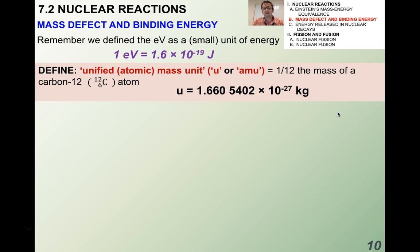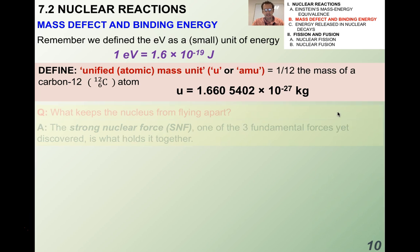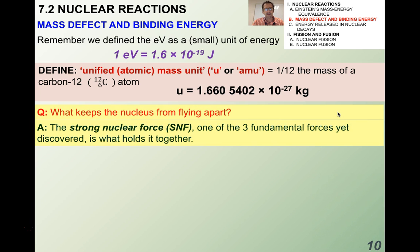An AMU, as you may know from chemistry, is defined as one twelfth the mass of a carbon-12 atom, and it ends up being 1.66 times 10 to the minus 27 kilograms.